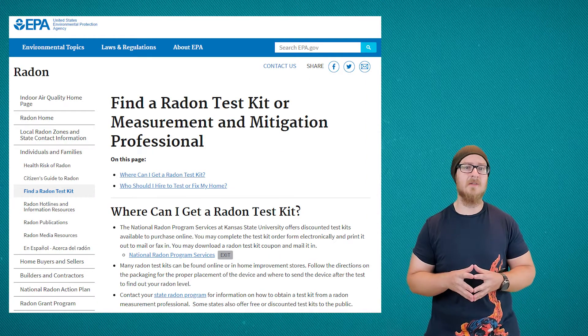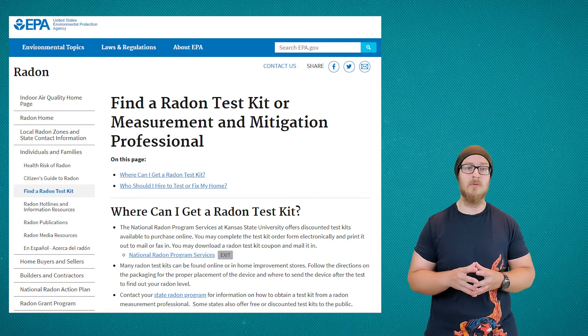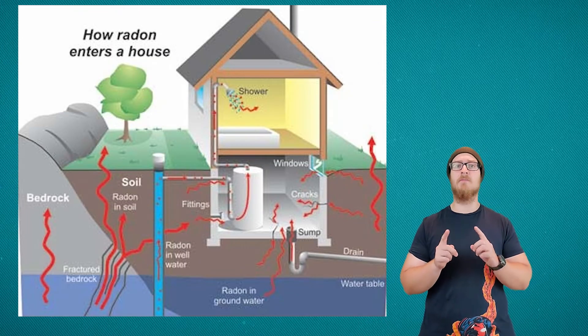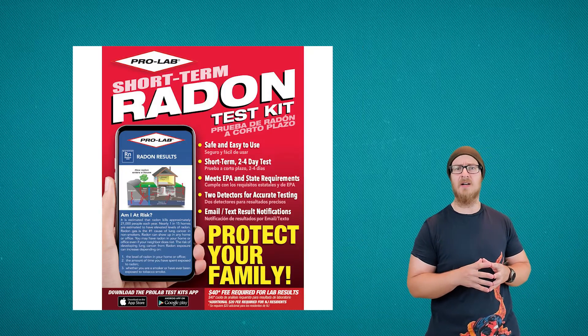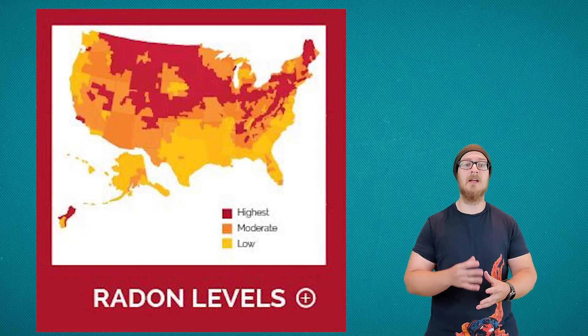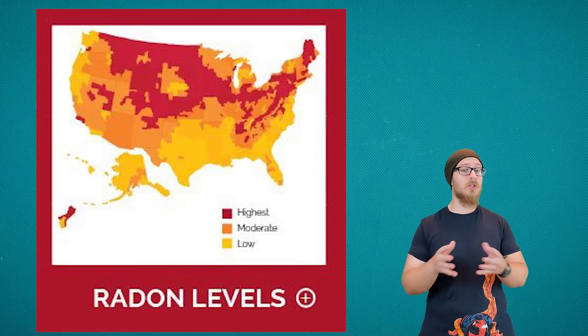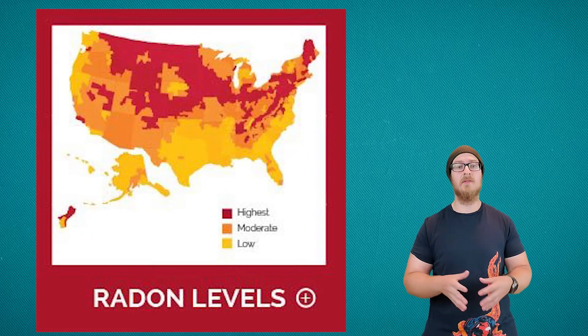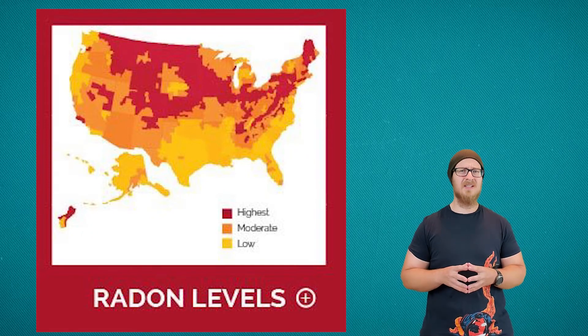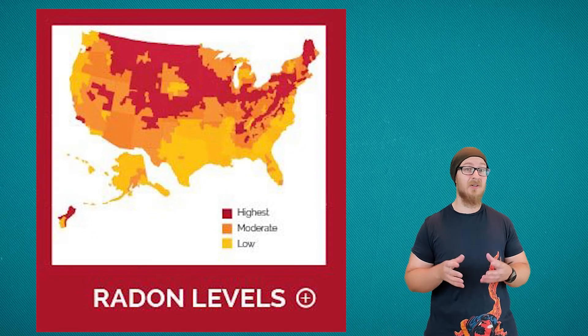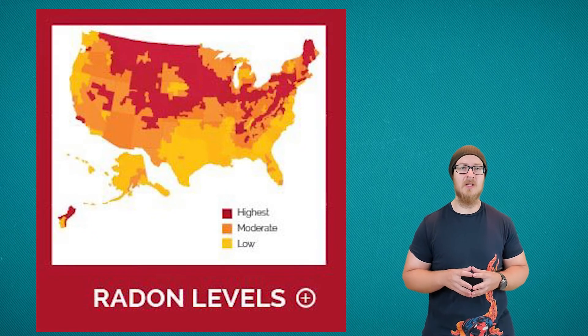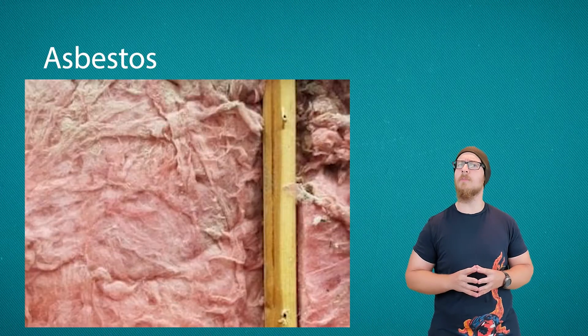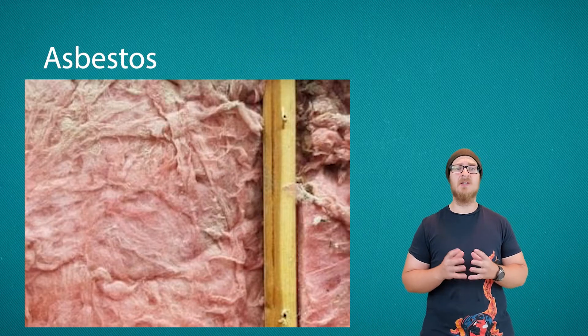The EPA also has radon test kits available, which I recommend everybody use. Basements with poor ventilation especially have a big risk of radon buildup, so if you're in the basement playing Fortnite all day, I really suggest you test the air. Because radon is a result of the decay of uranium, it's easy to predict which areas are at highest risk based on where we have the most uranium deposits. The United States has some of the highest concentrations of naturally occurring uranium, especially in the central U.S.